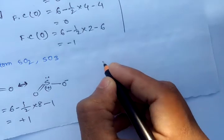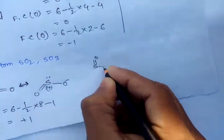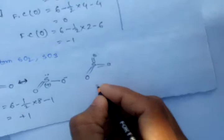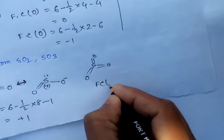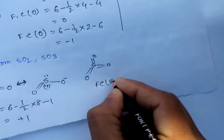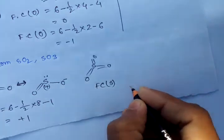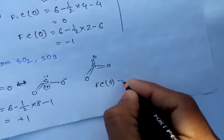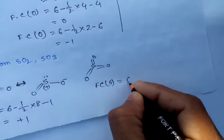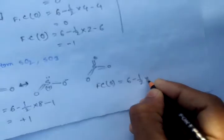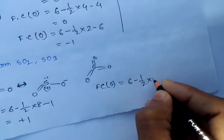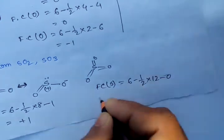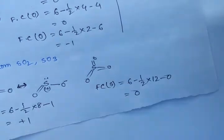For SO3: we calculate the formal charge of sulfur in the SO3 molecule. It is again valence electrons six, minus half times bonded electrons — there are 14 bonded electrons, so half of 14 equals 7 — minus zero lone pair electrons, equals zero. So the formal charge of sulfur in SO3 is zero.